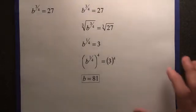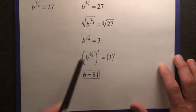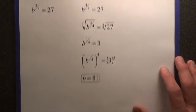So that's why in this problem, we're actually only going to get one answer. Because when we raise both sides to the 4th power, we get b equals 81.